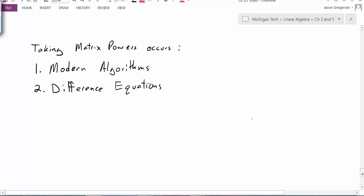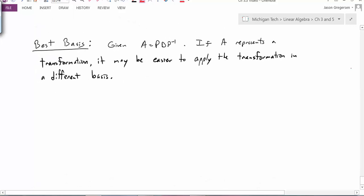Now, what else? What other applications can we see? The next one I want to talk about is thinking about the diagonalization in terms of choosing the best basis to represent a transformation. Here we have some matrix A and we can express it as the product of these values. We can diagonalize A. But, if A represents a transformation, it might be easier to apply the transformation in a different basis.